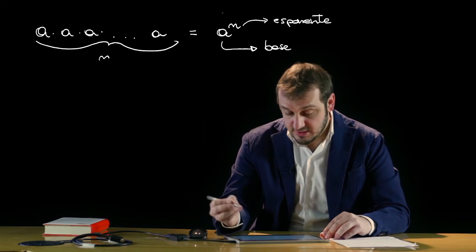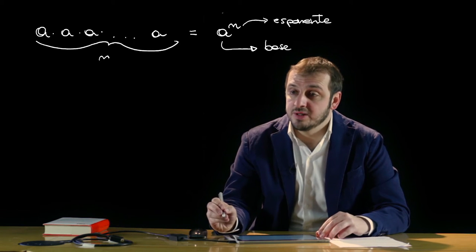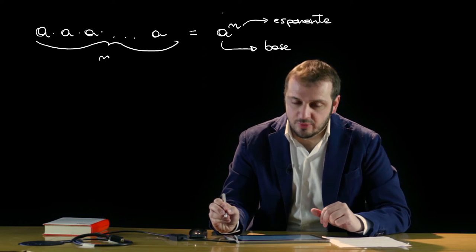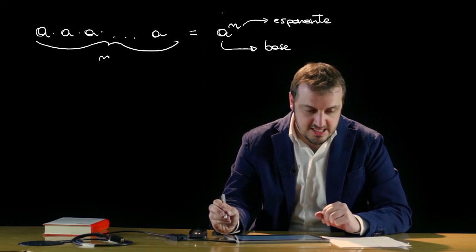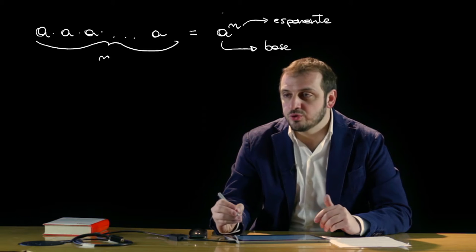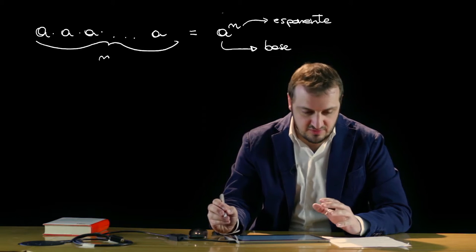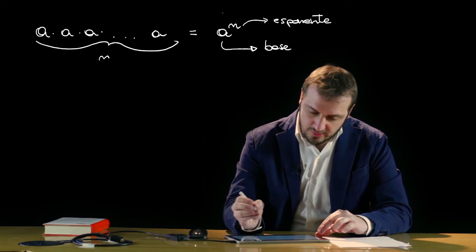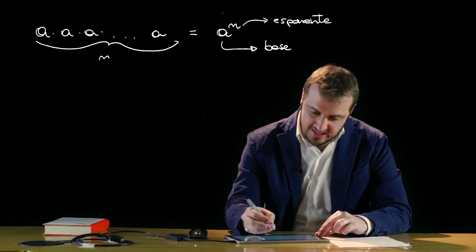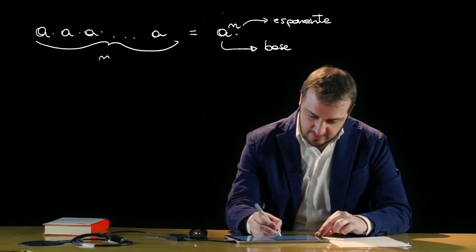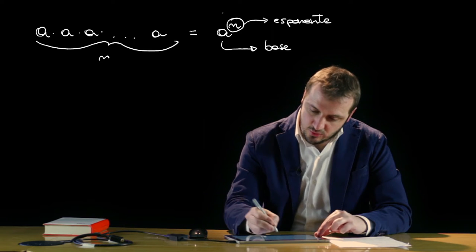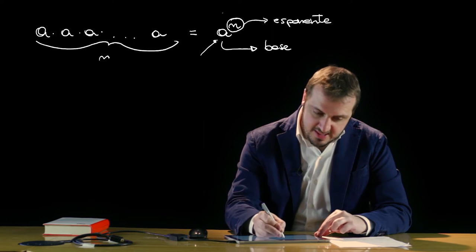Quindi, se l'esponente è maggiore di 1, possiamo definire la potenza come il prodotto di tanti fattori, quanti vengono indicati dall'esponente, tutti quanti uguali alla base a.